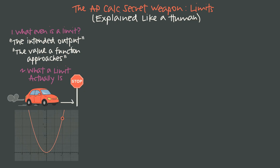If we bring this idea back to math and look at a graph, the limit is the y-coordinate that we're getting close to as we get close to a certain x-coordinate. Here we're at x equals 2 and y equals 4. Tracing along the graph toward x equals 2 from both sides, we see we're getting close to y equals 4. So even if the function isn't defined at x equals 2 — because of that hole — the limit is 4.